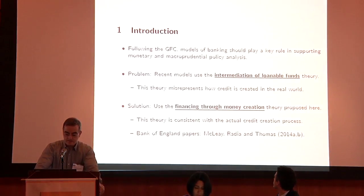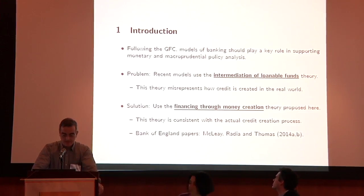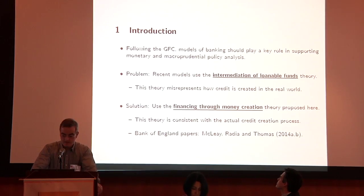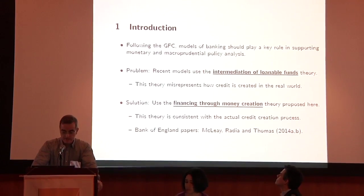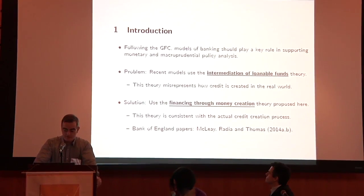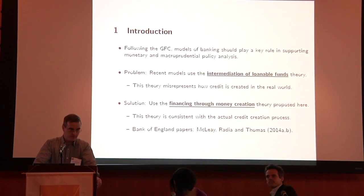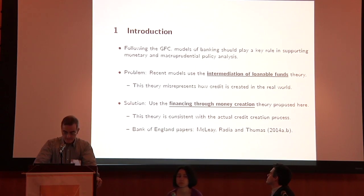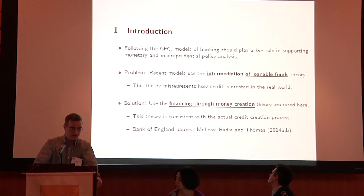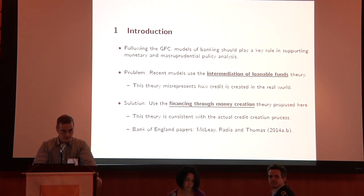By way of introduction: following the crisis, in the central banking space, models of banking can and should play a role in supporting monetary and macro-financial policy analysis. What I will argue today is that recent models use what I'm calling the Intermediation of Loanable Funds Theory of Banking. I made that term up, but you will find those words in a lot of model descriptions out there, and I will argue that this theory misrepresents how credit is created in the real world. The solution I propose is what I call the Financing through Money Creation theory of banking, which I will argue is more consistent with the actual credit creation process.